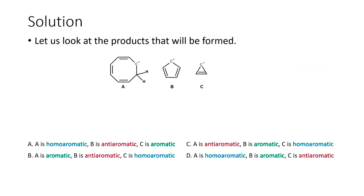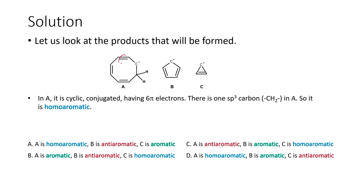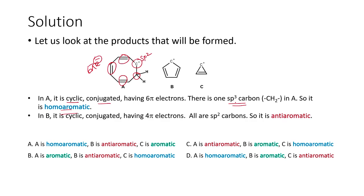What is the rule governing aromaticity? Compound A has 3 pi bonds, so total 6 pi electrons are present in this system. It is a cyclic, conjugated system — 3 carbons are conjugated — and we also have an SP2 hybridized carbon atom with 6 pi electrons, but there is one SP3 hybridized carbon atom. When an SP3 hybridized carbon atom is present, we cannot say that compound is aromatic, because all aromatic compounds must have cyclic conjugated all-SP2 hybridized carbon atoms. This compound therefore exhibits homo-aromaticity, meaning one additional SP3 hybridized carbon is present.